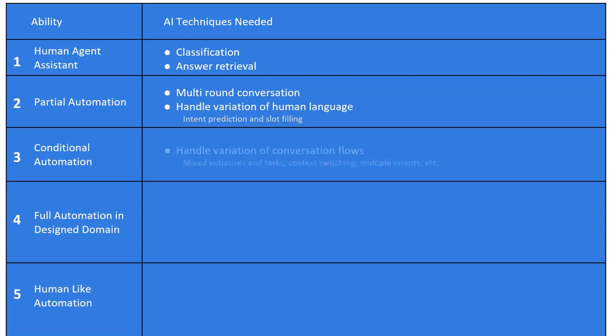For level three, we also need to handle variation of conversation flows. Human conversation could flow in different ways. For most tasks the chatbot was designed, trained, or taught to handle, it can handle the task if it can handle the variation of conversation flow. Techniques for handling things like mixed initiatives, mixed tasks, context switching, and multiple intents are needed to build level three AI.